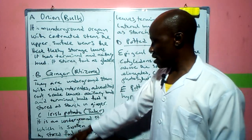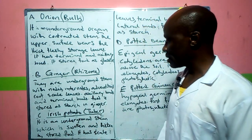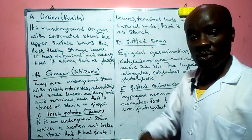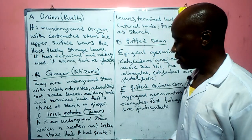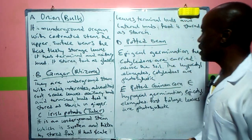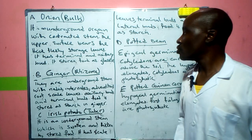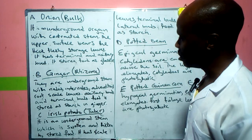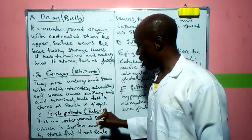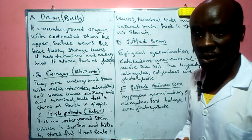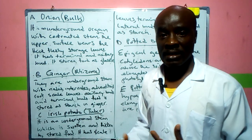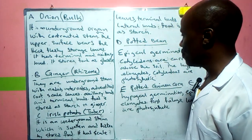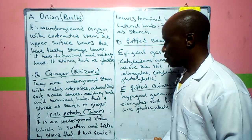The Irish potato is also an underground stem, which is swollen as a result of food storage. It has a scale leaf, terminal buds, and lateral buds. Food is also stored as starch. Notice that both Irish potato and ginger store food in the form of starch, while onion stores food in the form of glucose.